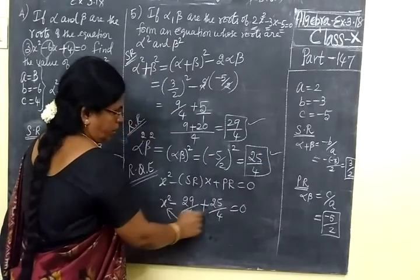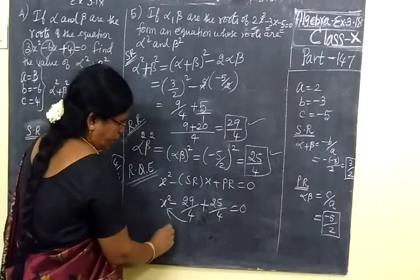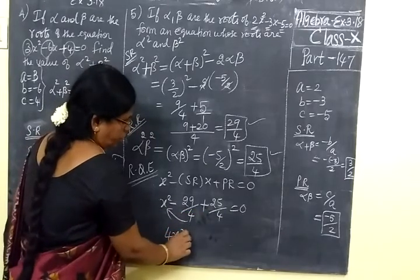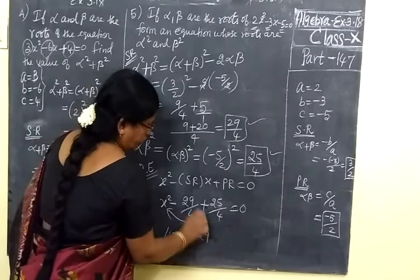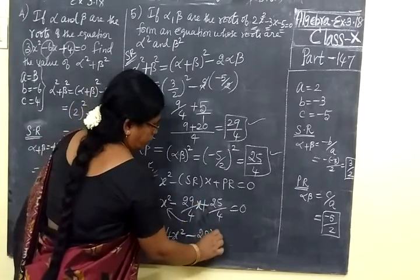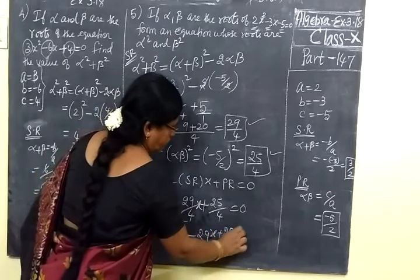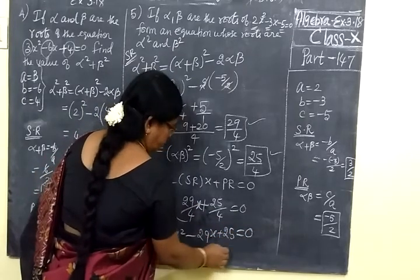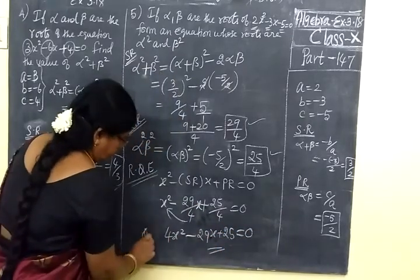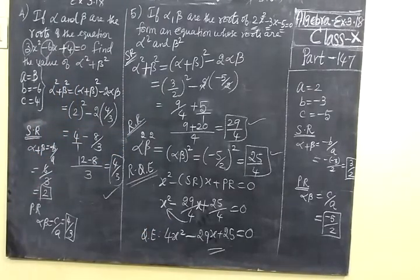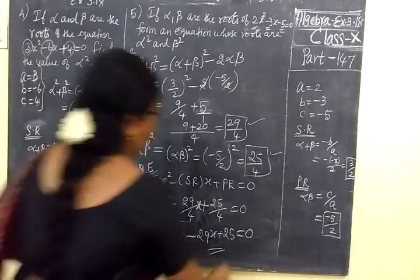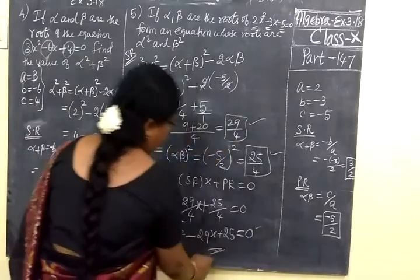So X square minus 29 by 4 plus 25 by 4 equal to 0 is the required quadratic equation, which is the answer. Here the answer is 4X square minus 29X plus 25 equal to 0.